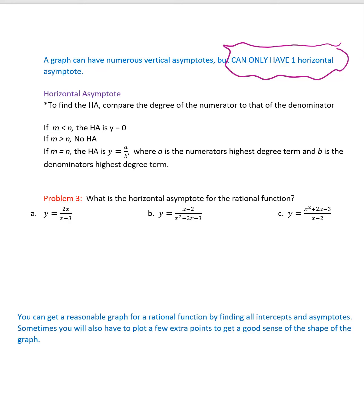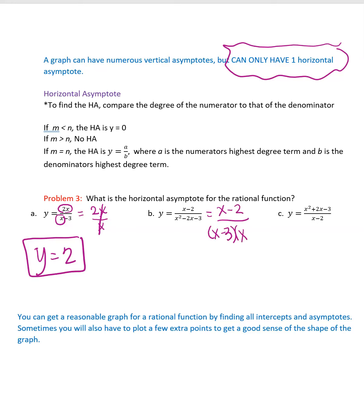For the first example, the highest degrees are 2x on top and x on the bottom — they're the same degree, so the horizontal asymptote is y = 2/1 = 2. For the second example, factor to get (x − 3)(x + 1) in the denominator; the numerator is degree 1 (x) and denominator is degree 2 (x²). Since numerator is smaller, the horizontal asymptote is y = 0.